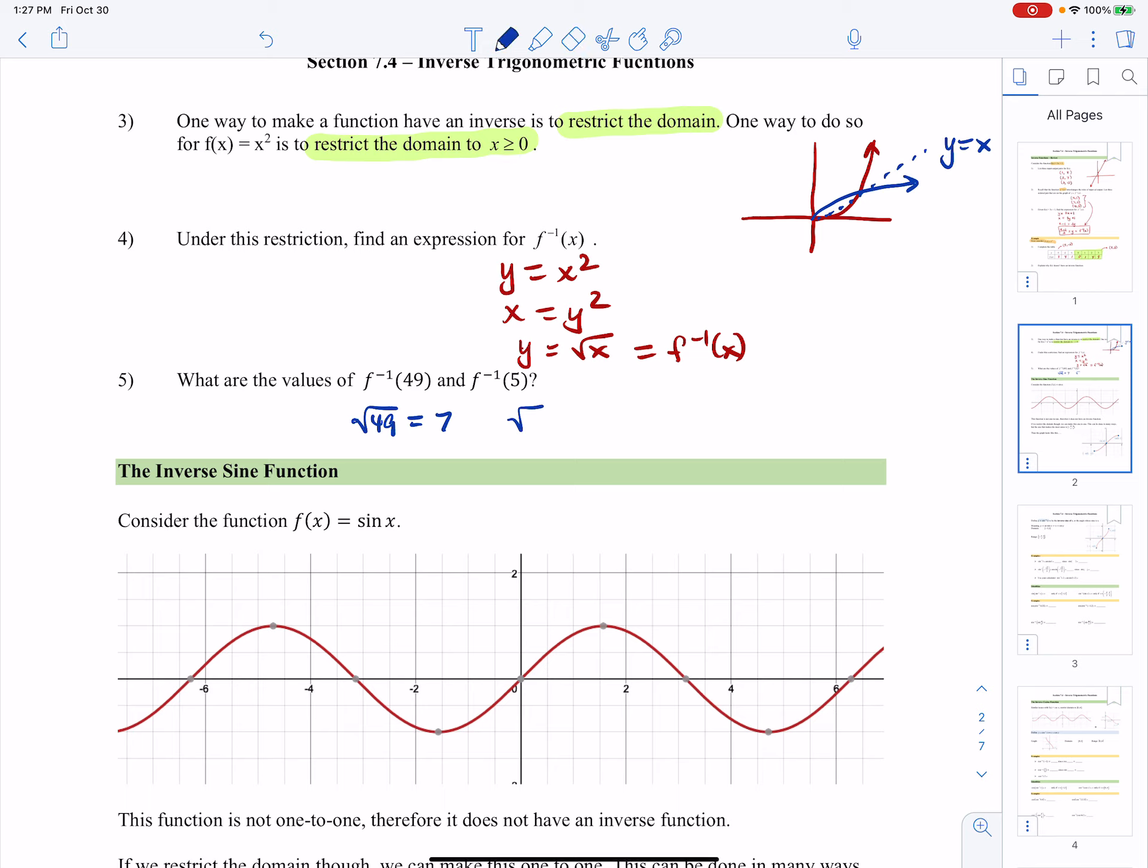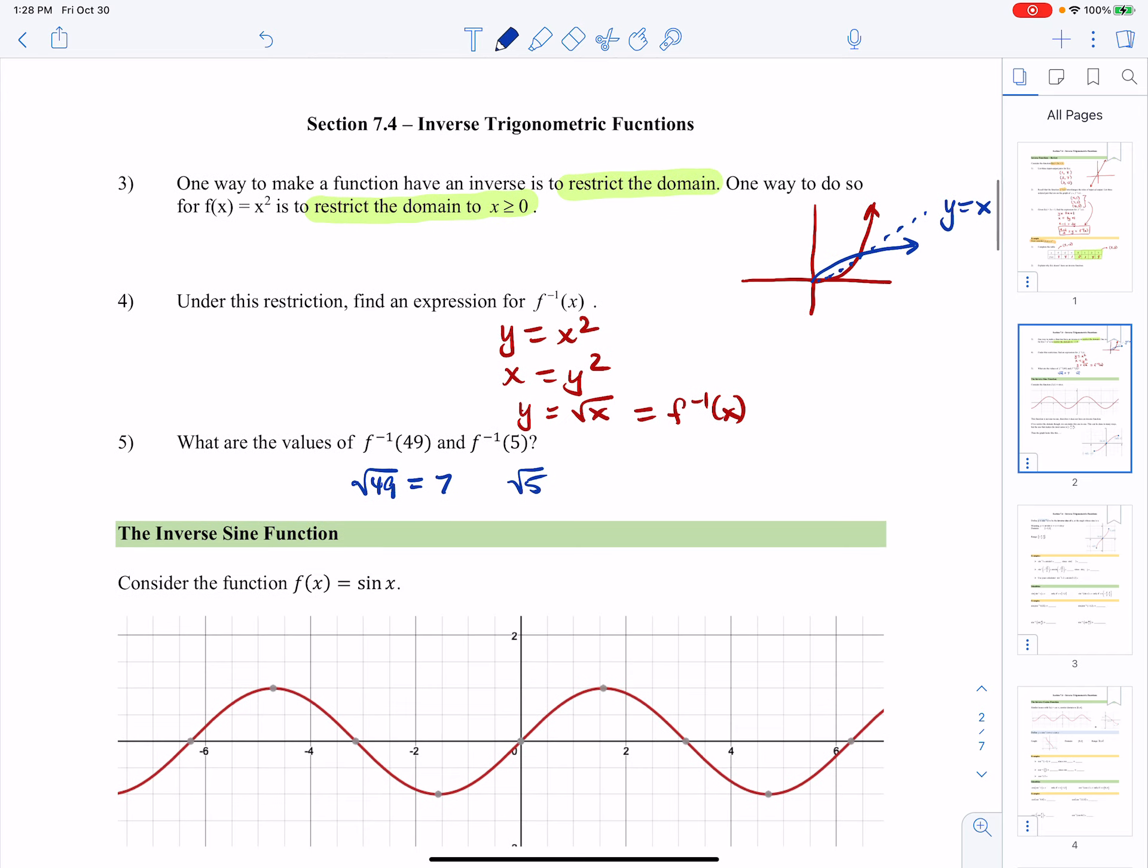So another way of looking at that is, you know, what value, what original value of x gives me the output of 49? Because the input for the inverse is the same as the output from the original function. So there's a little bit of an introduction to inverse functions, a little bit of a recap.